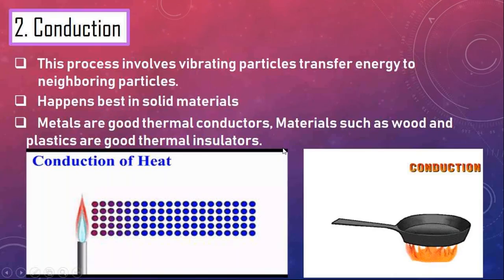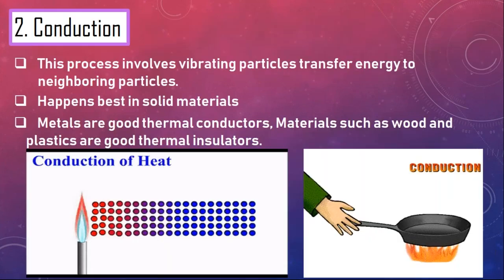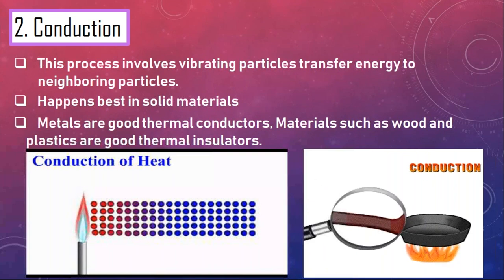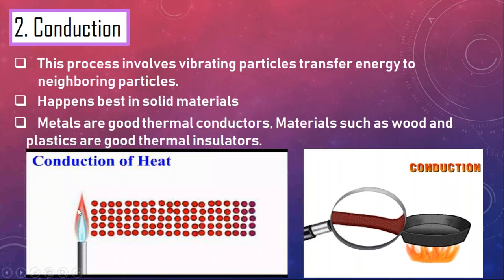Radiation is the first process for transferring heat energy. The second process is conduction. Conduction happens best in solid materials. The key idea behind conduction is that it occurs because of the vibration of particles. When you heat up one end of a substance — let's imagine it's a metal — the particles inside begin to receive energy.